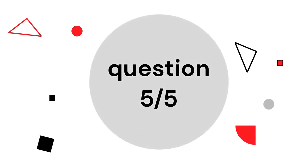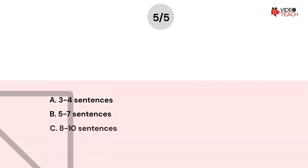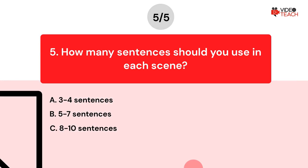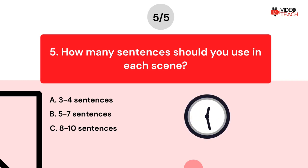Question number five. How many sentences should you use in each scene? Option A — three to four sentences. Option B — five to seven sentences. Option C — eight to ten sentences. Now you have about 15 seconds to think about your answer.